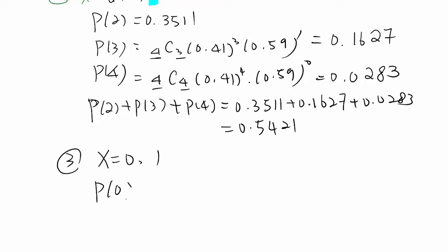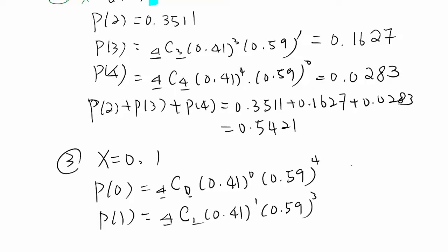Which means you need to find P(0) and P(1) separately like last time. So it becomes 4C0 times 0.41 to the zero power times 0.59 to the fourth power, and 4C1 times 0.41 to the first power times 0.59 to the third power. You just calculate that.